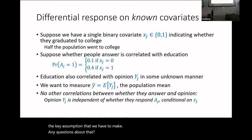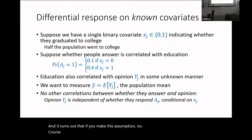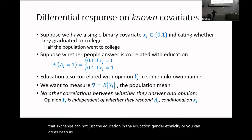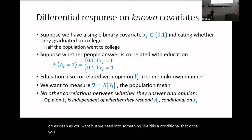If you make this assumption, xj doesn't just have to be education — it can be education, gender, ethnicity. You can go as deep as you want. But we need an assumption like this: once you have the covariates you're conditioning on, they explain away all the selection bias.